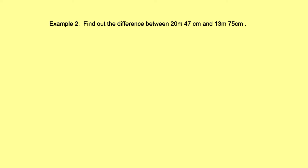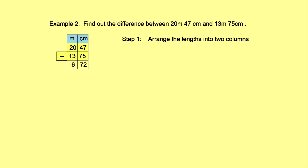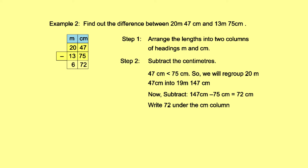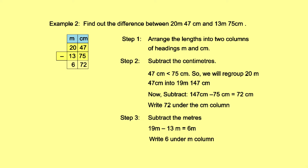Example 2: Find the difference between 20 meters 47 cm and 13 meters 75 cm. Step 1: Arrange into m and cm columns. Step 2: Subtract the centimeters — 47 cm is less than 75 cm, so we regroup 20 meters 47 cm into 19 meters 147 cm. Now, 147 cm − 75 cm = 72 cm. Write 72 under the centimeter column. Step 3: Subtract the meters — 19 m − 13 m = 6 m. Write 6 under the meter column.